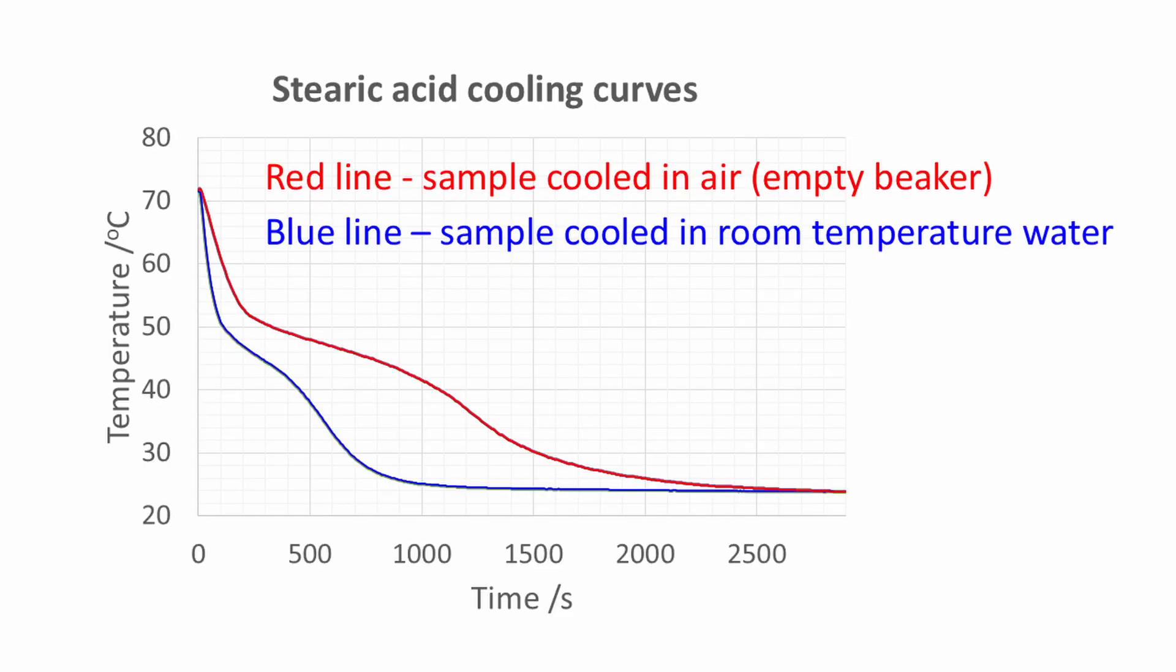Here are the cooling curves that were plotted using the data from the experiment. The red line is the sample cooled in air. The blue line is the sample that was cooled in room temperature water.